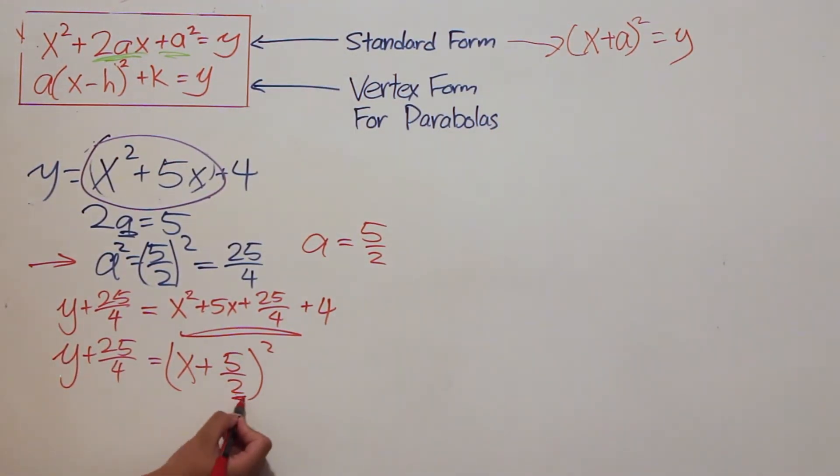And we can't forget to add the 4 to give us y plus 25 over 4 equals to quantity x plus 5 halves squared plus 4.